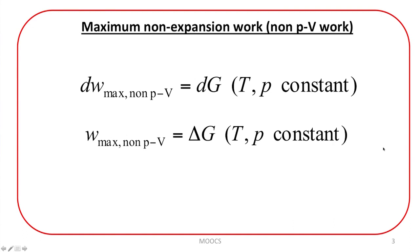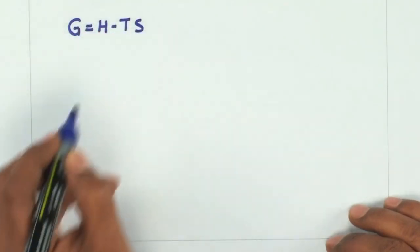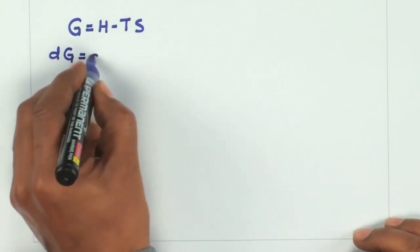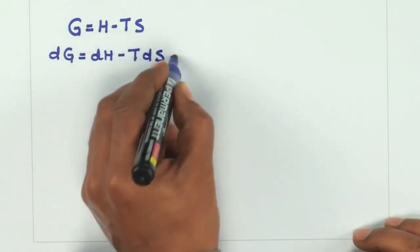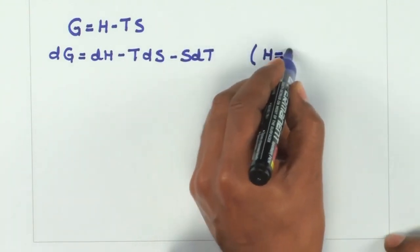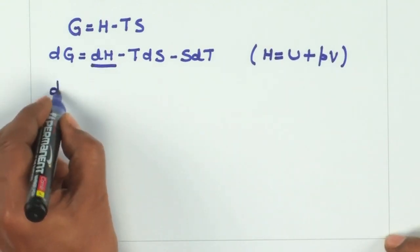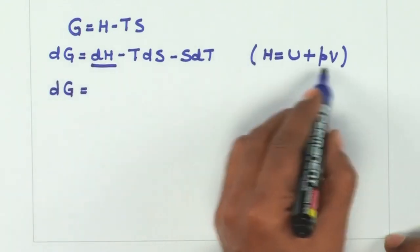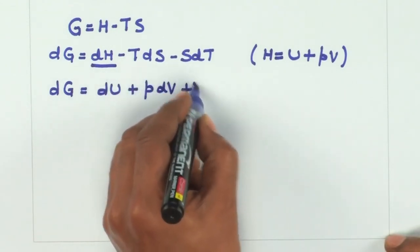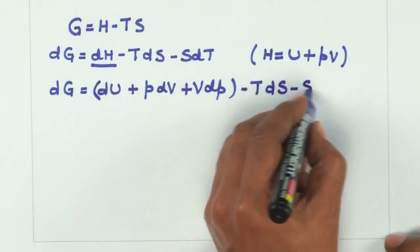Our goal is to prove that the maximum non-pressure-volume work obtainable from the system is equal to delta G at constant temperature and pressure. For this, I will start with the definition of Gibbs free energy G. So, dG is equal to dH minus T dS. Now, let there be some advancement in the reaction or the process. So dG is equal to dH minus T dS minus S dT. Now I will use H is equal to U plus PV and substitute for dH. So dG equals dU plus P dV plus V dP, minus T dS minus S dT.